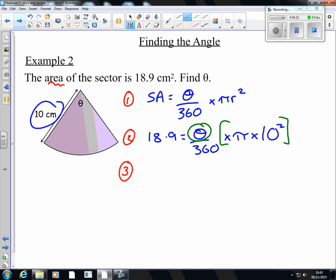It doesn't matter that it's squared there, we're still multiplying by 10 squared. So we're going to divide by 18.9, sorry, 18.9 divided by pi times 10 squared. And that's going to leave theta over 360.